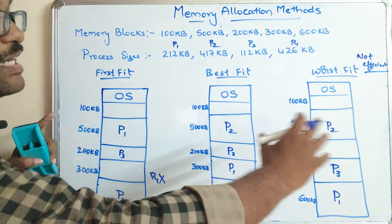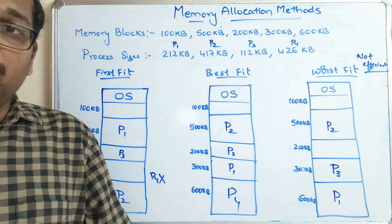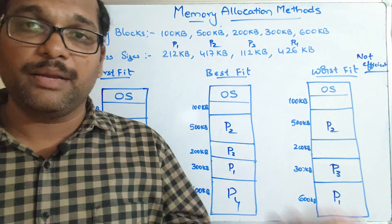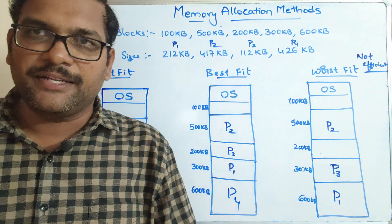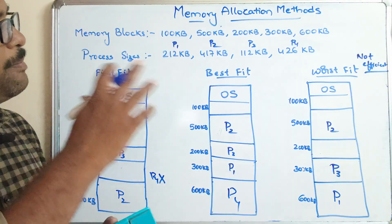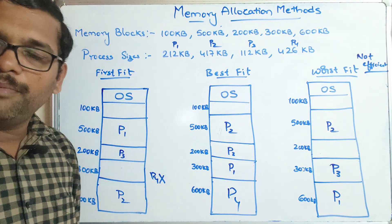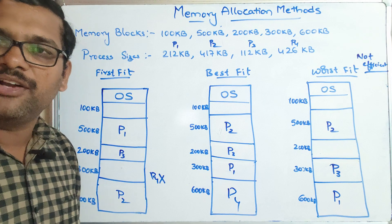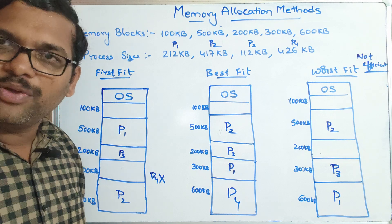So these are the three different memory allocation methods — First Fit, Best Fit, and Worst Fit — explaining how memory is allocated to a process. Hope you understood this concept. If you enjoyed this session, please like, share with your friends, and don't forget to subscribe to our channel. Thanks for watching!